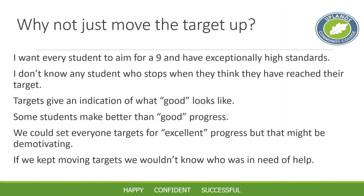Parents often ask why we don't just move targets up — if a student is currently a 4, why not put 5 as their next target? We want every student to achieve the absolute best they can, but if we keep moving targets up, we don't really know who is performing better than their potential and who's not. We like to keep the good progress indicator as a consistent benchmark throughout the college. It tells us what good looks like for similar students but is very much not a ceiling — they can surpass it and make excellent progress.